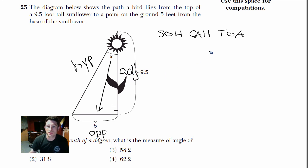So the question is, which one do we have to use? Opposite and adjacent? Opposite and adjacent, that's tangent. So the tangent, this is how you write it on your paper. The tangent of X equals 5 over 9.5.